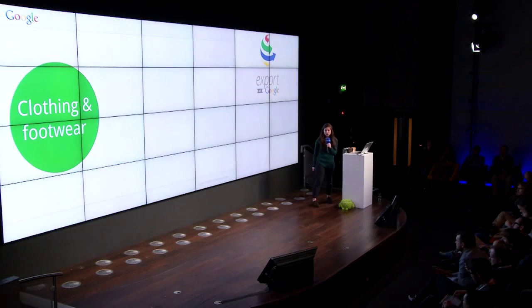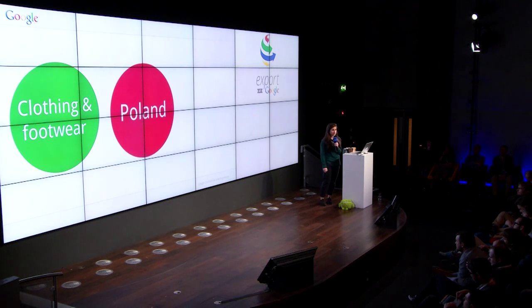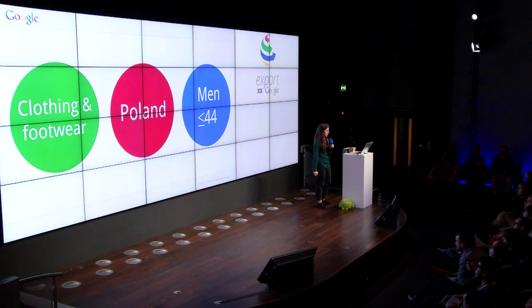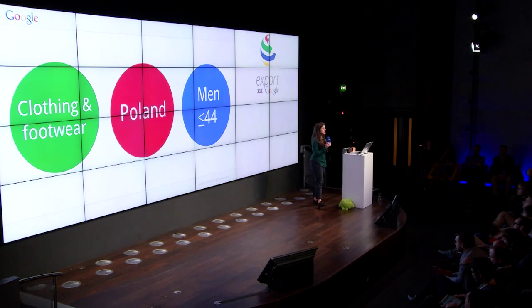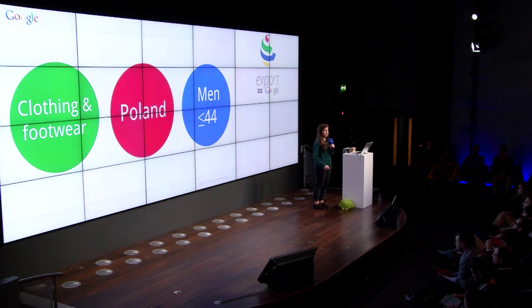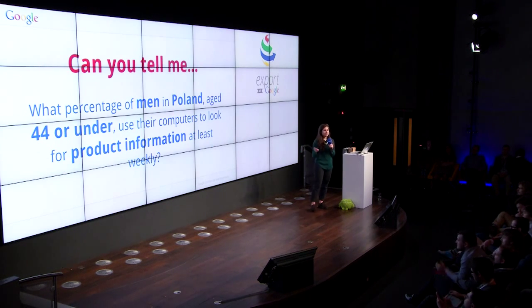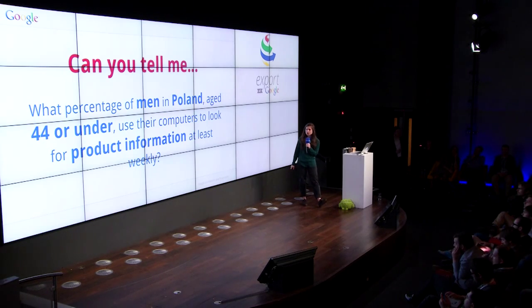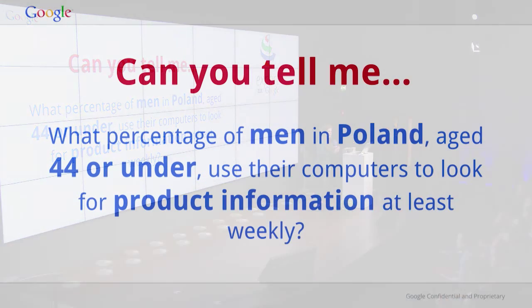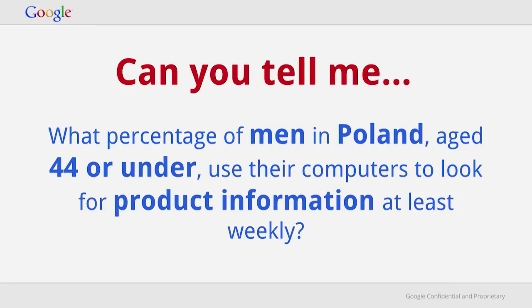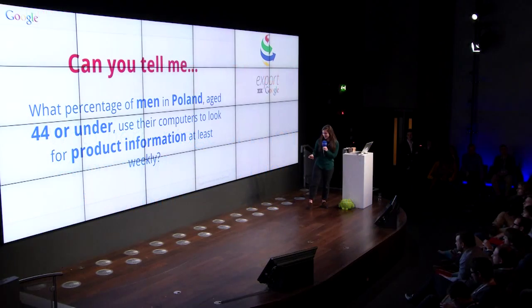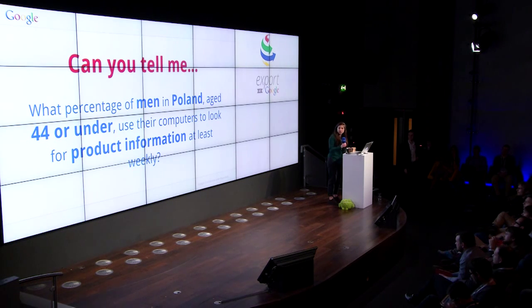For this demo, I'll continue the Foot Locker example — looking at the clothing and footwear section for males under 44 in Poland. I have a little challenge for you: the consumer barometer is beautifully optimized for tablet and mobile, so follow along. In the graph builder, the first thing we get is the market — we're going to choose Poland. It gives you a snapshot of device usage in the country. On the left-hand side, you've got all the questions you could dig into, cut by device usage, path to purchase, and online video usage.